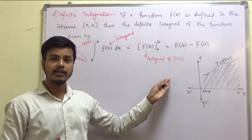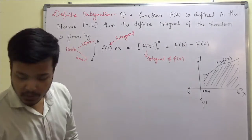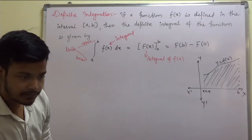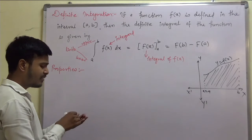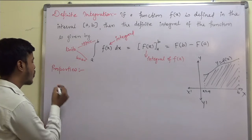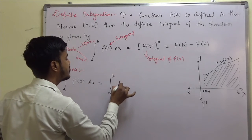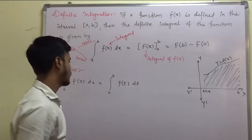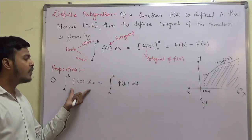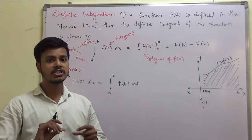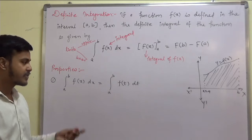After this we have some more properties of definite integration. These properties are very handy when we solve problems. The very first is: integral from a to b of f(x) dx equals integral from a to b of f(t) dt. This property says the value of the integral remains the same if you change the variable from x to t, provided the limits are not changed.